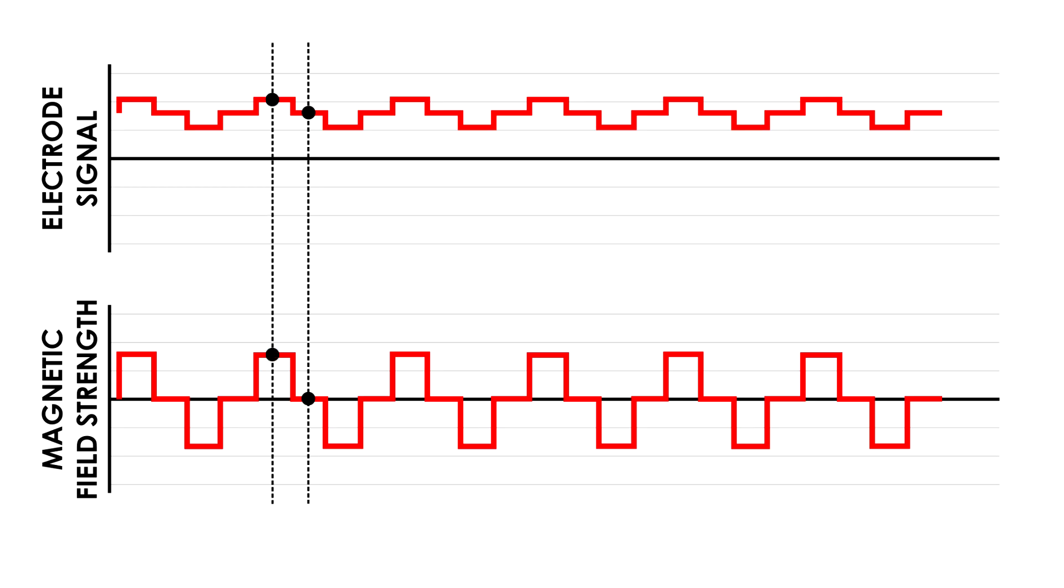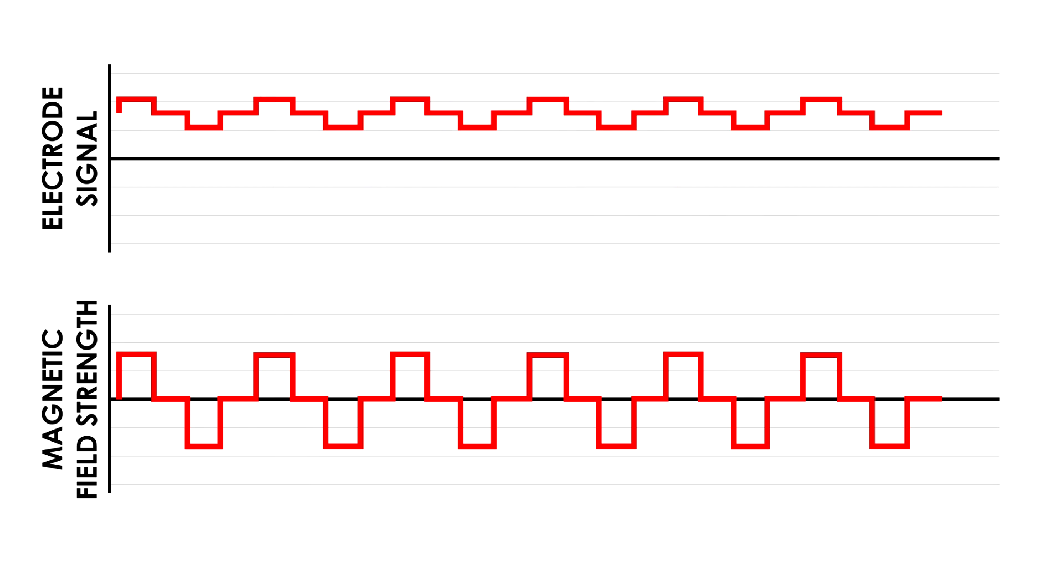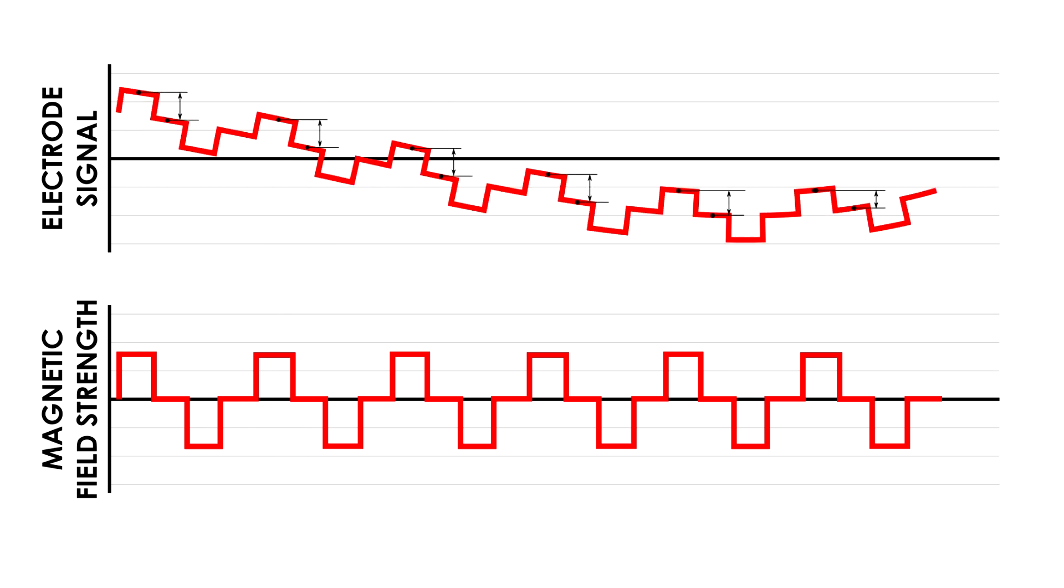But if we sample the signal at the peak of the magnetic field and subtract the voltage measured when the magnetic field is zero, we're left with only the part of the signal we care about. Even if the noise is changing over time, we're only measuring the part of the signal which is induced by the magnetic field.